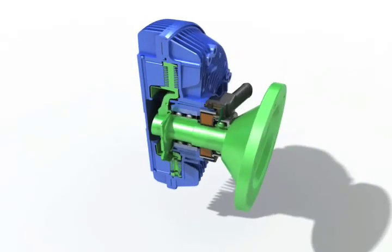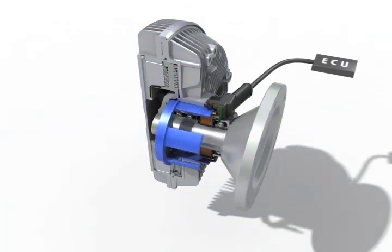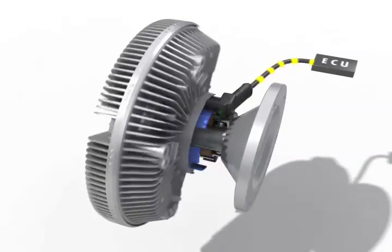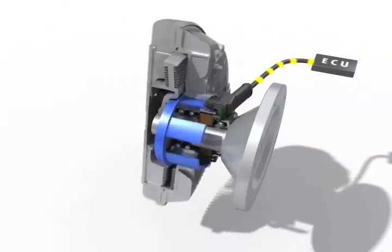The clutch is actuated based on the fan speed signal, which is sent to the Engine Control Unit, or ECU, for precise engine coolant and charged air adjustments.